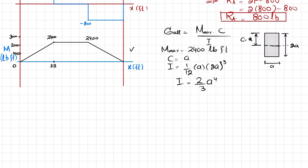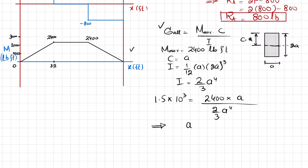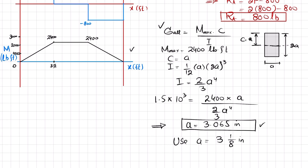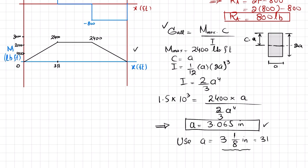Substituting into the flexure formula: 1.5 × 10³ psi = 2400 · a / [(2/3)a⁴]. Solving for 'a' gives a = 3.065 inches. Rounding up to the nearest 1/8 inch standard size that exceeds 3.065 inches, we select a = 3-1/8 inches = 3.125 inches.